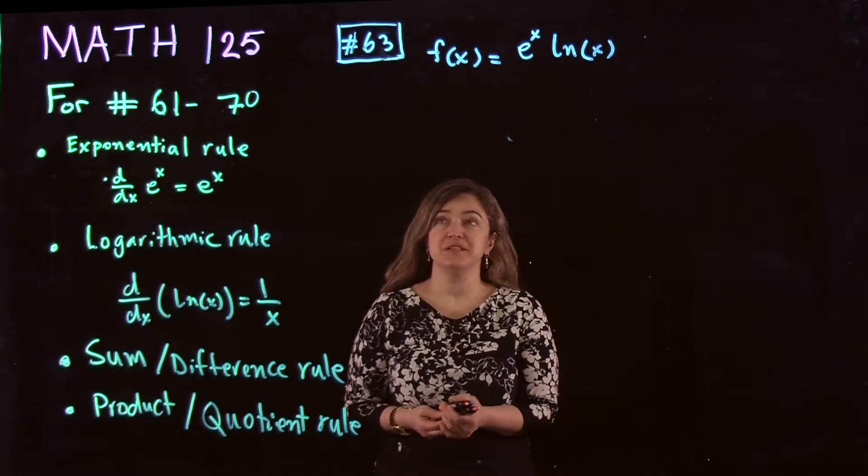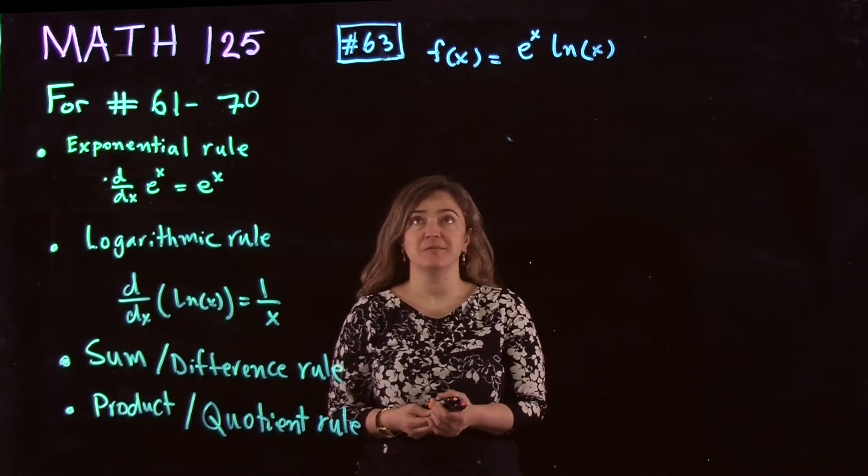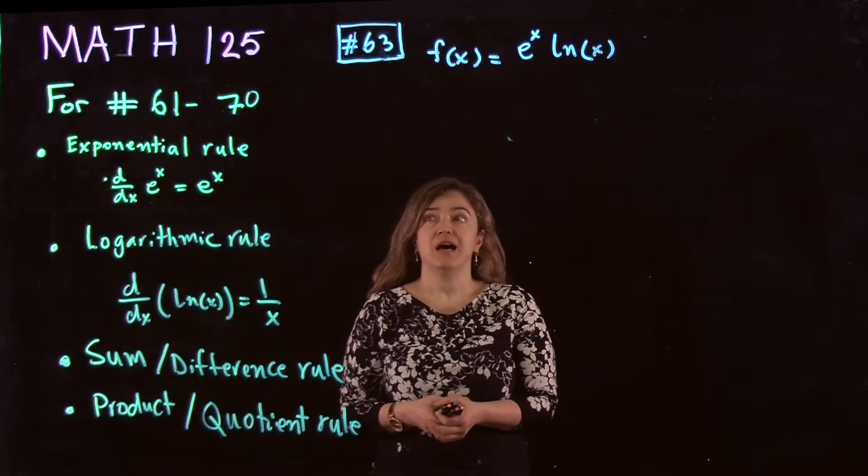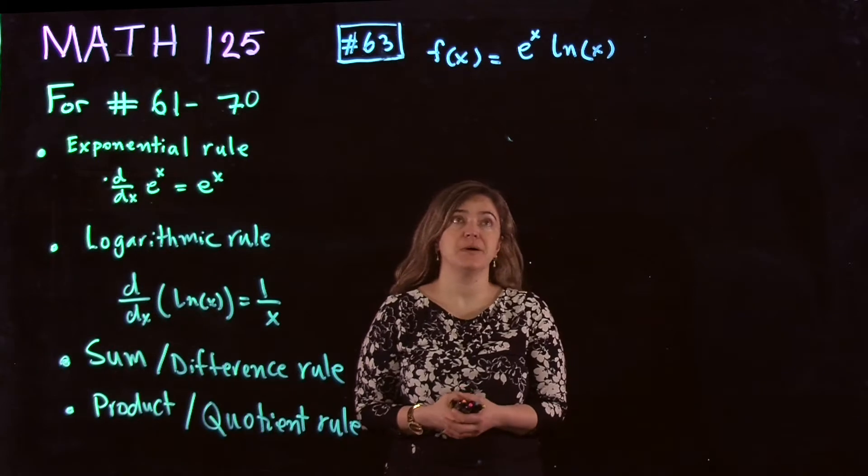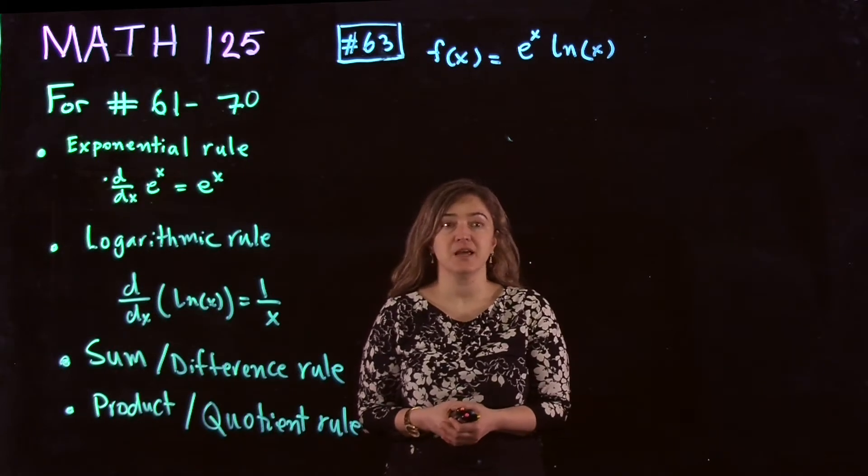We're continuing with MATH 125 gateway questions, this time number 63, out of the pool 61 to 70. F of x equals e to the power x times ln of x is the function.